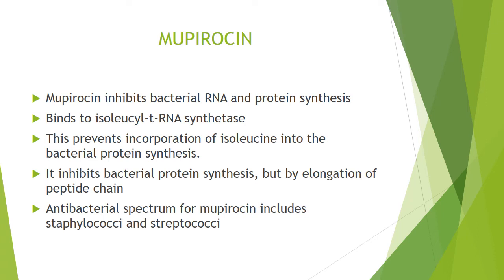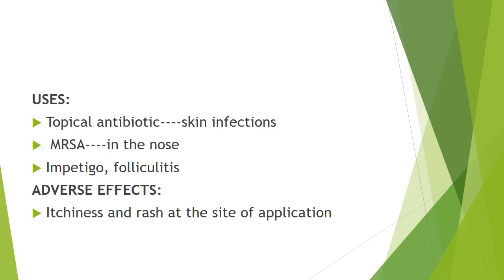The next drug is mupirocin. Mupirocin inhibits bacterial RNA and protein synthesis. It binds to isoleucyl-tRNA synthetase, preventing incorporation of isoleucine into the bacterial protein synthesis, inhibiting elongation of the peptide chain. Its antibacterial spectrum includes especially staphylococci. Clinical use: it is a topical antibiotic used for skin infections, methicillin-resistant Staphylococcus aureus colonization especially in the nose, impetigo, and folliculitis. Adverse effects include itchiness and rash at the site of application.